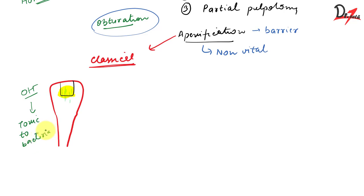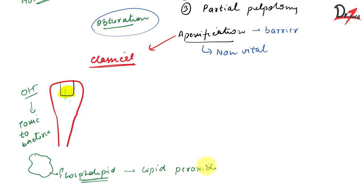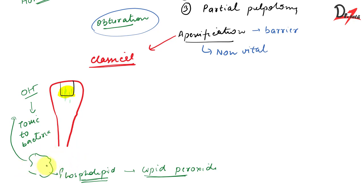The bacterial cell membrane is made up of phospholipids — unsaturated fatty acids. The hydroxyl ions pull a hydrogen from these unsaturated fatty acids, triggering a chain reaction forming lipid peroxides. Since lipid peroxides are unstable, further hydroxyl ions continue the chain reaction. Simply stated, the OH⁻ ions break down the phospholipids in the cell membrane, killing the cell. That is how calcium hydroxide exerts its antibacterial effect on bacteria in a necrotic tooth.